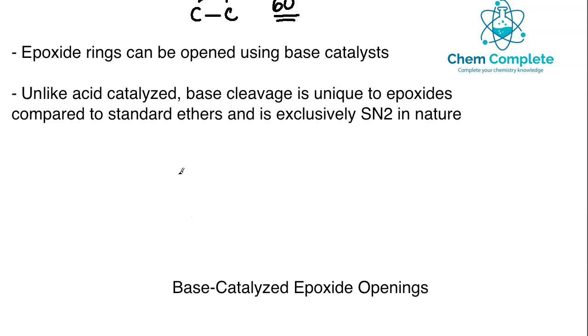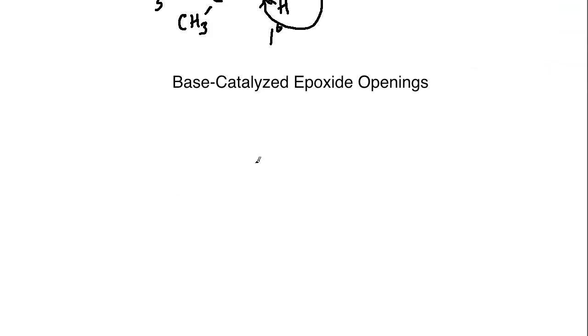In the base-catalyzed, it doesn't matter whether there's tertiary present or not, it's always going to be exclusive SN2 type behavior, which means we will always attack the less substituted area. To give a quick example, if I had an epoxide with a tertiary and primary site, if this was acid-catalyzed the tertiary site would be attacked, but in base-catalyzed it's going to be the primary. Whatever the base is, we would expect it to come in and attack this site opening the epoxide in this manner.